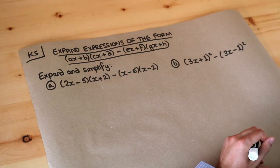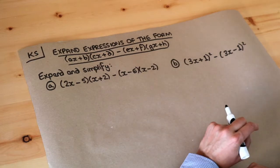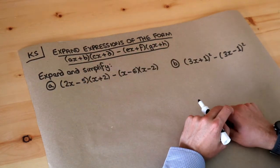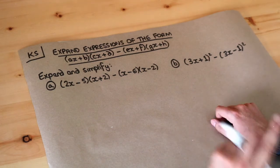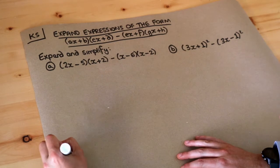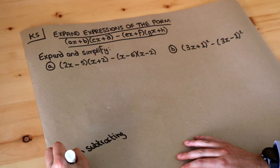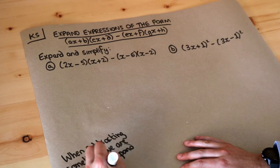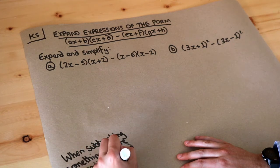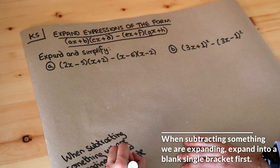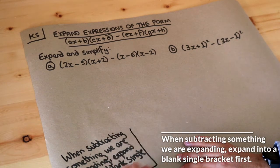Hello and welcome to this Dr Ross Mass's key skill video on expanding expressions of this particular form, where we've got two brackets multiplied together minus another two brackets multiplied together. I've got one tip for this video: when subtracting something we're expanding, expand it into a blank single bracket first. That's the one key point I want to make in this video.